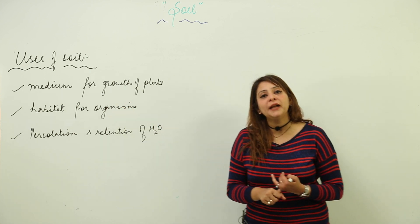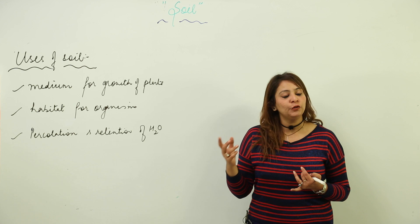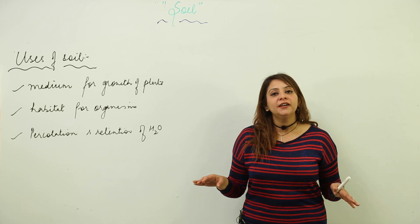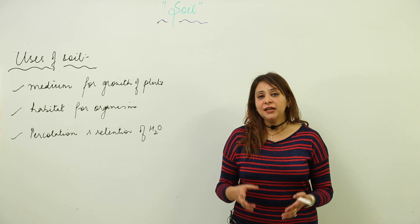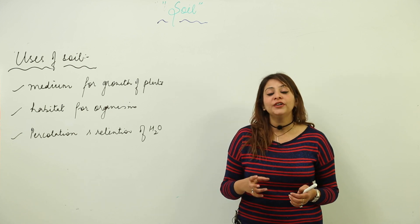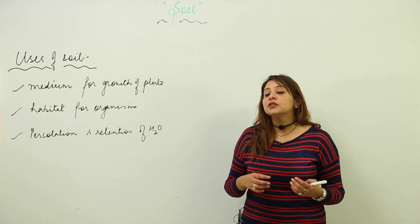Why can it support plants? Because we have already discussed that the top layer consists of humus, minerals, and nutrients which are very essential for plant growth. Moreover, they support the plant also.